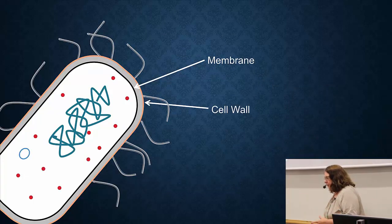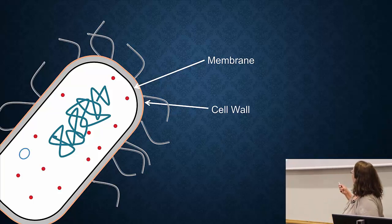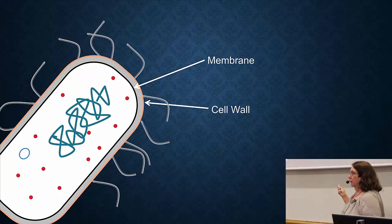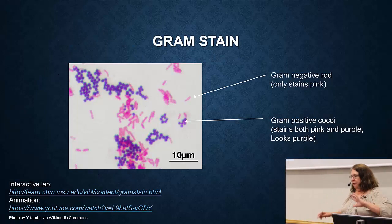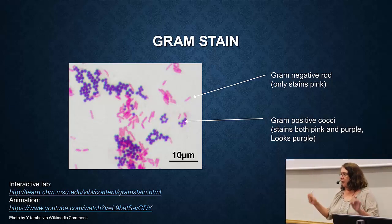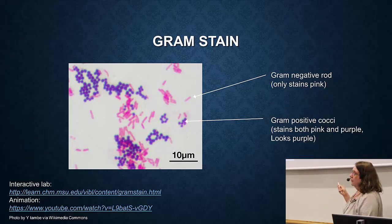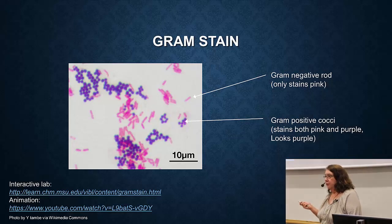Bacteria also have a layer on top of the membrane. The membrane is shown in black here, but then you have this gray layer, and we call that the cell wall. The cell wall is outside the cytoplasmic membrane. There are different shapes of bacteria, but there's also another characteristic that is very diagnostic for what type of bacteria you have, and that is something called gram stain.